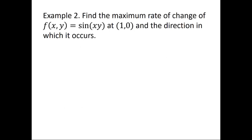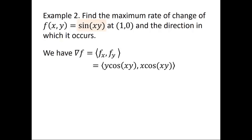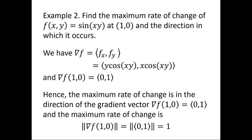Let's find the maximum rate of change of f = sin(xy) at the point (1, 0) and the direction in which it occurs. The gradient has components: ∂f/∂x = y cos(xy) and ∂f/∂y = x cos(xy). Evaluating at (1, 0) gives the gradient vector (0, 1). The maximum rate of change occurs in the direction of (0, 1), and the maximum rate of change is ||(0, 1)|| = 1.